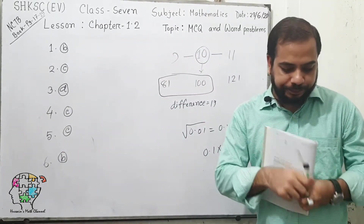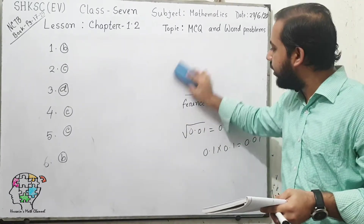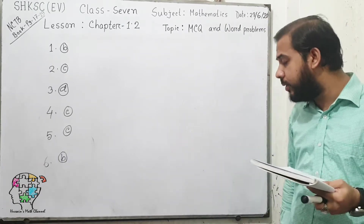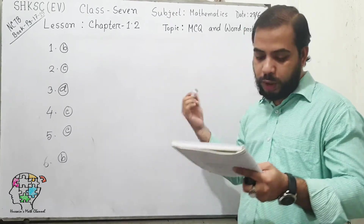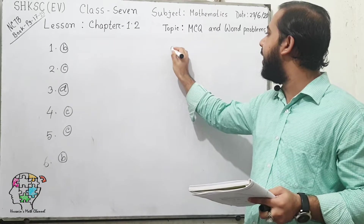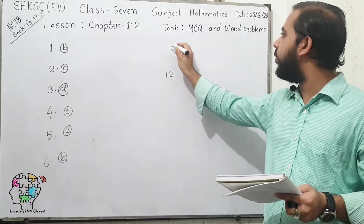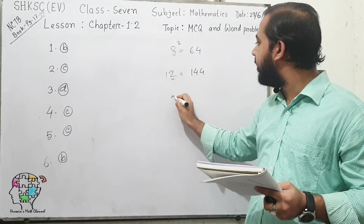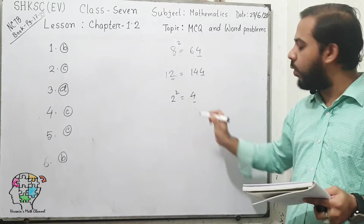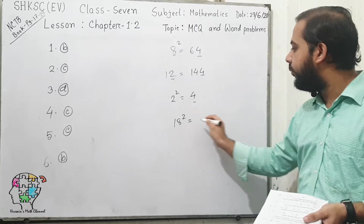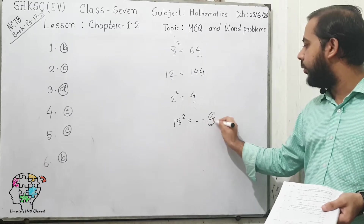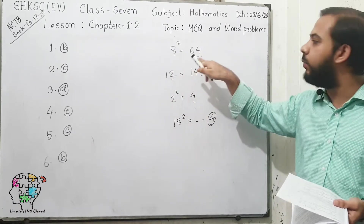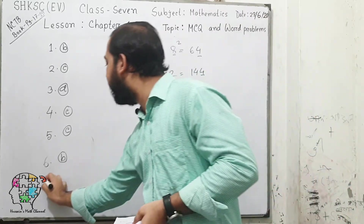Question number 7: if the digit in the unit place of any number is 2 or 8, the digit in the unit place of its square will be what? For example, 8 squared is 64 and 12 squared is 144. The digit 2 squared is 4. So the unit place will always be 4. If any number has unit place digit 8 or 2, the square of that number will have unit place digit 4. So the answer is option B.